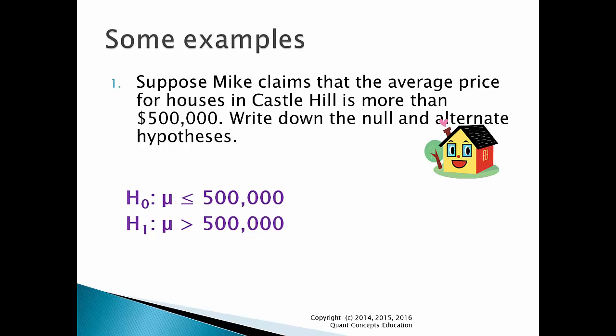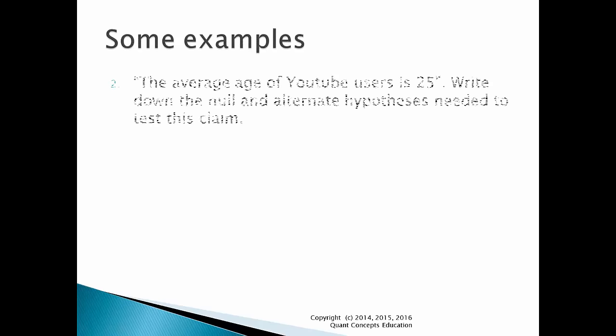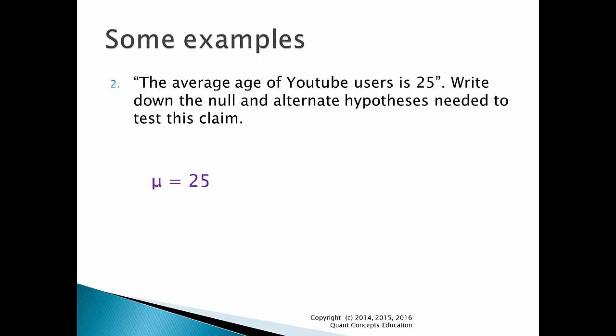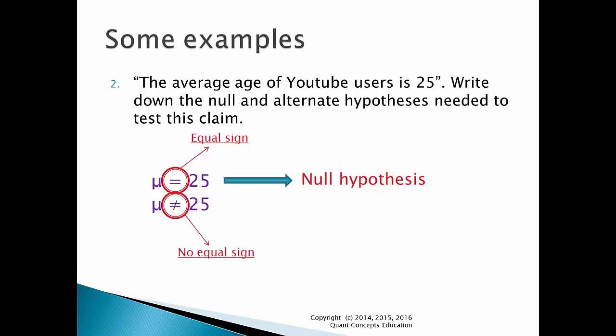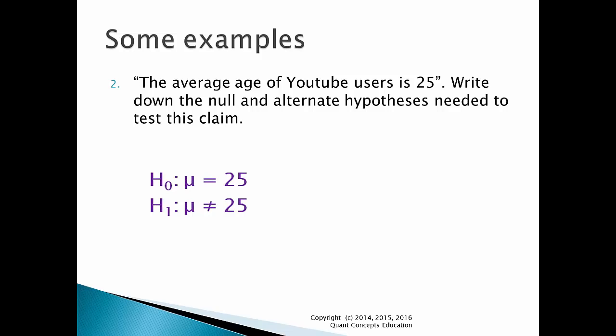Let's look at another example. Someone claims that the average age of YouTube users is 25. Write down the null and alternate hypotheses needed to test this claim. First, we write down the claim being made: the average age of YouTube users is equal to 25. Now we write down the counterclaim: the average age is not equal to 25. We can see the equal sign is in the first statement, so this must be the null hypothesis. The second statement has the unequal sign, so this must be the alternate hypothesis. We simply write these down in the proper format: H0 for the null hypothesis and H1 for the alternate hypothesis.